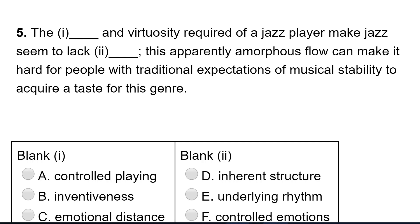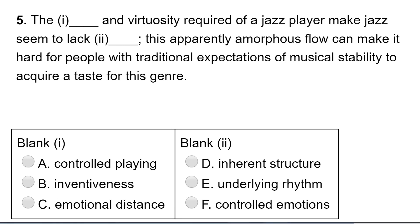The something and virtuosity required of a jazz player make jazz seem to lack something. This apparently amorphous — shapeless — flow can make it hard for people with traditional expectations of musical stability. So if people expect stability, they'll get something different with jazz. What's the opposite of stability? Not controlled, nothing to do with emotions. So inventiveness would fit. The inventiveness, unpredictability, and virtuosity required of a jazz player make jazz seem to lack inherent structure.